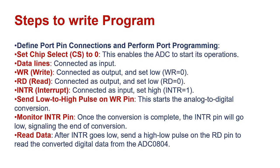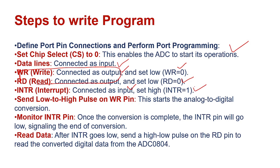Now we go to the next steps. Set chip select to 0 — this is a basic step to start the operation. The data lines are connected as input. Write and read are connected as output because they are low-enable, so WR is 0 and RD is 0. Interrupt is connected as input because it is initially set high.